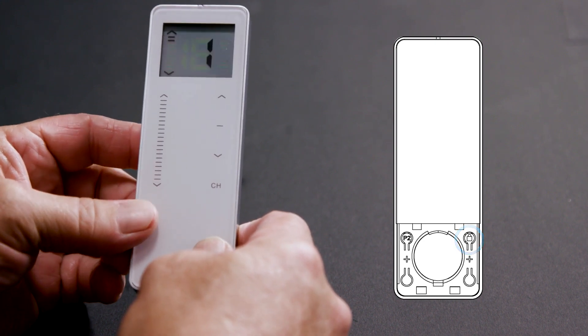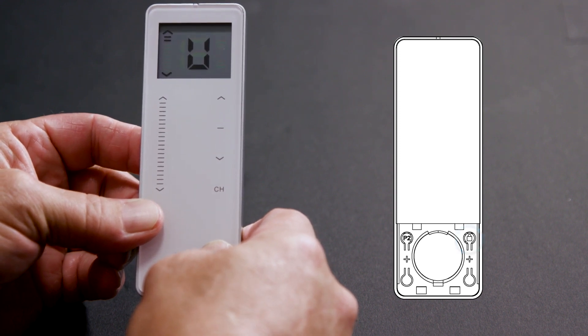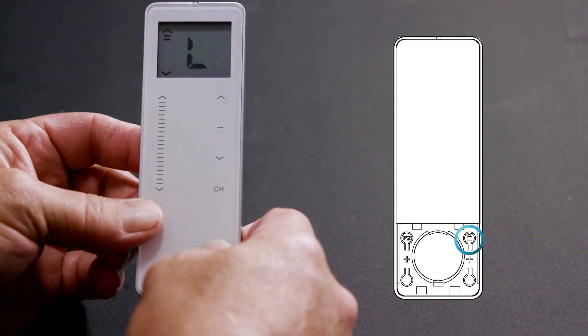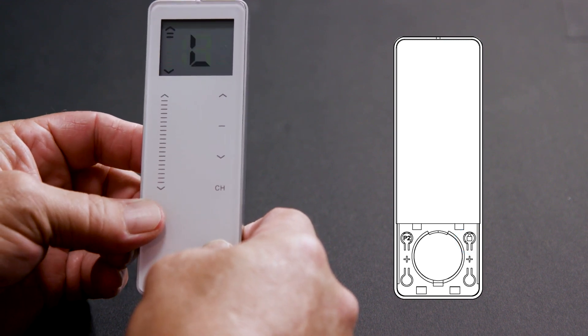Remotes are shipped from the factory unlocked. To lock the remote, press and hold the lock button for 5 seconds until the display changes to L. The remote is now locked.